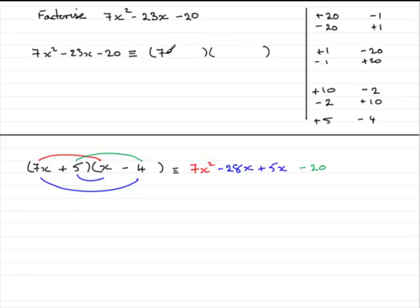So we've got 7x, then plus 5, and x minus 4. The other way around, you could have had x minus 4 here, 7x plus 5 there. It wouldn't matter. It gives you exactly the same answer. Well, that brings us to the end of this particular tutorial.